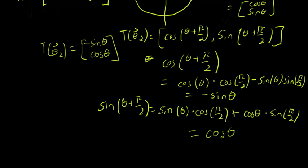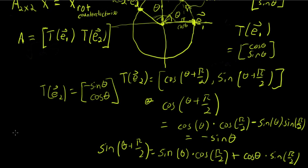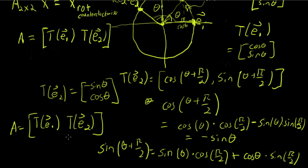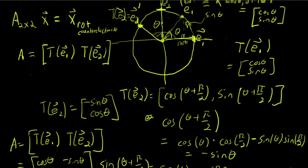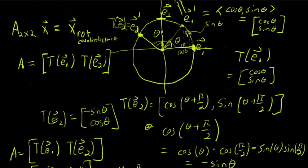So now we have our second column. This means that matrix A, with T(E1) as the first column and T(E2) as the second column, is equal to: first column (cosine theta, sine theta), second column (-sine theta, cosine theta). That's the matrix for a rotation of theta counter-clockwise.